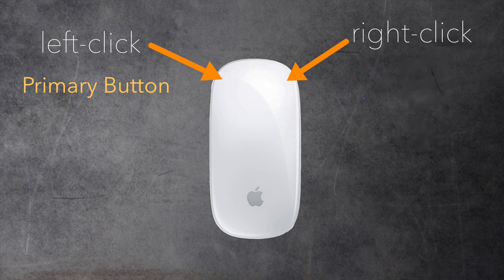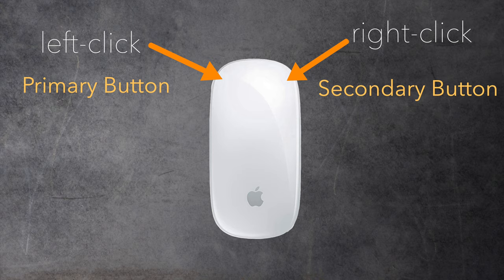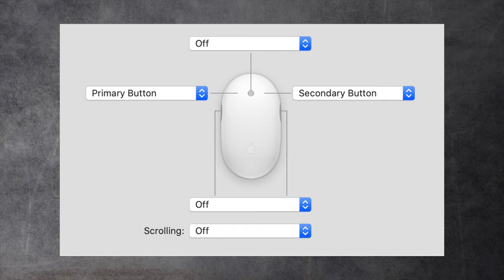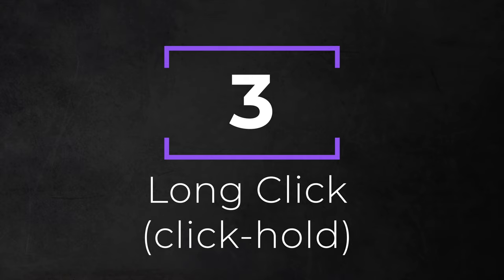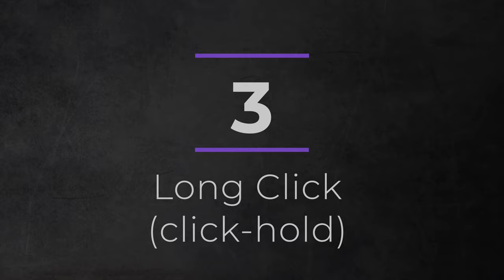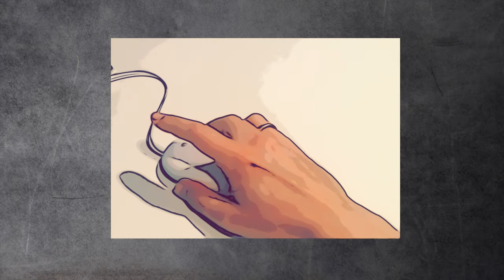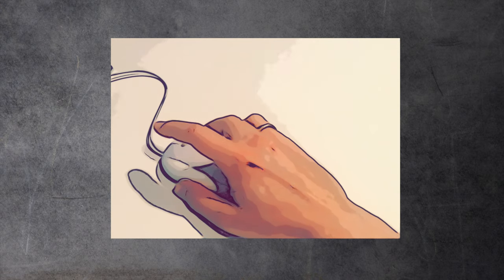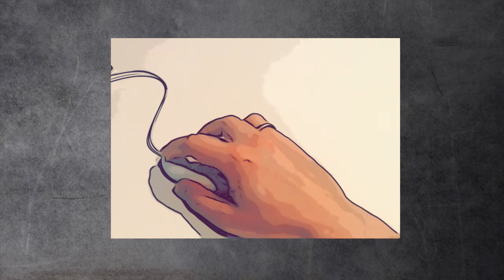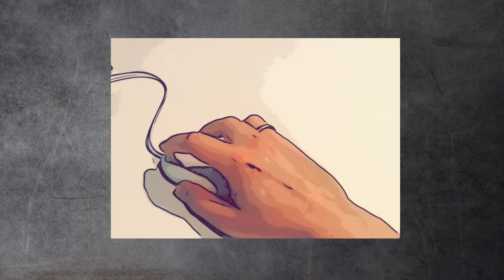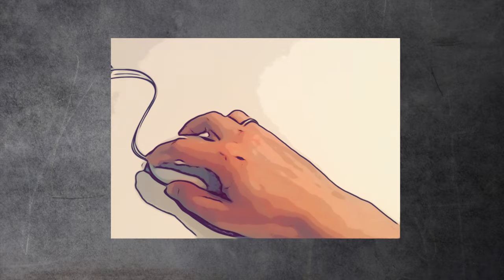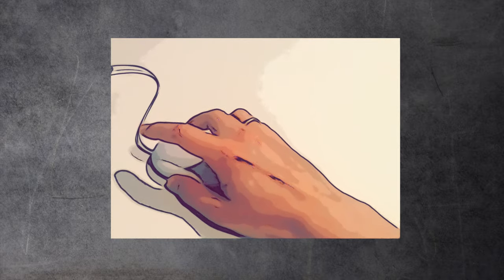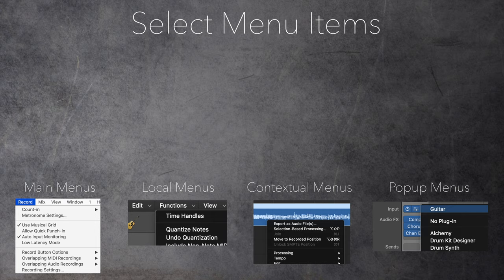There are two terms Apple uses in this context: the primary button for the left click and the secondary button for the right click. Here's a screenshot of the System Preferences where you can configure those buttons. The next very important click action in Logic is the long click or click-hold — instead of quickly clicking, you press the button down for at least a second or keep holding it. Logic makes great use of the long click, especially for some actions it wants to hide from the casual user.